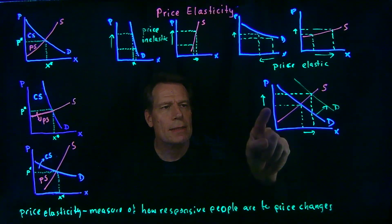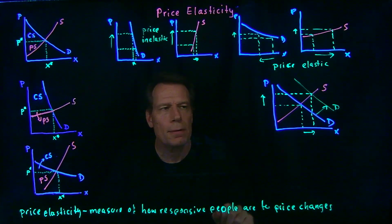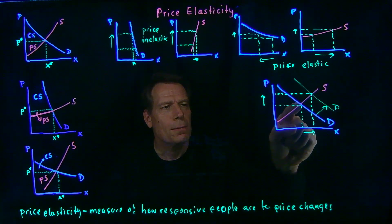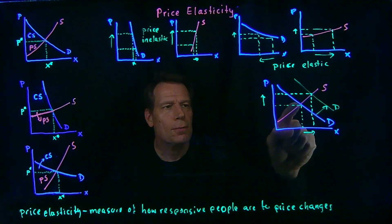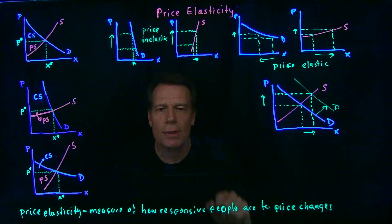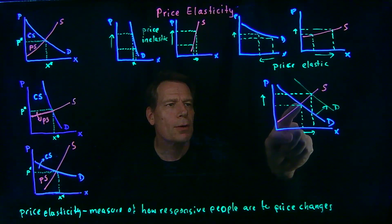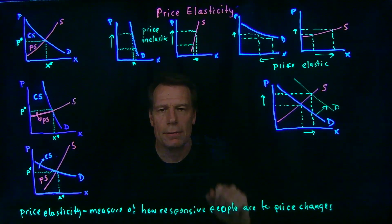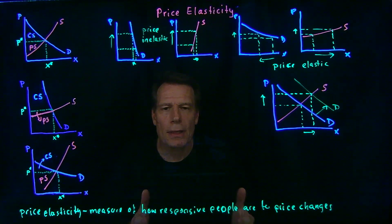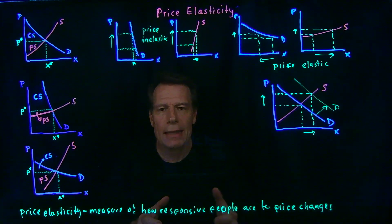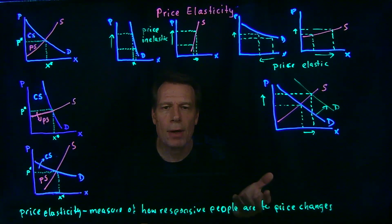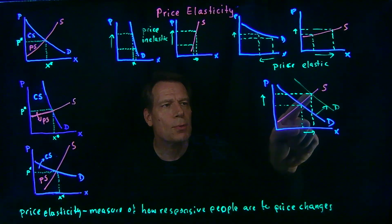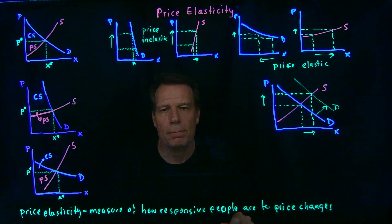If the price had stayed at the original level, then firms on their unchanged supply curve would supply exactly what they supplied before. But now consumers on the new demand curve would demand more than that. So firms would realize there are lots of consumers who can't get the goods they want, so they'd be able to raise their prices, and that upward pressure on prices would take us to this new equilibrium.